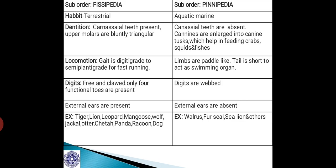With reference to dentition, Fissipedia have carnassial teeth and upper molars are bluntly triangular. Whereas in Pinnipedia, carnassial teeth are absent — though they come under Carnivora, they do not have carnassial teeth. The canines are enlarged into tusks, which help in feeding on crabs, squids and fishes, their prey animals in the marine aquatic habitat.